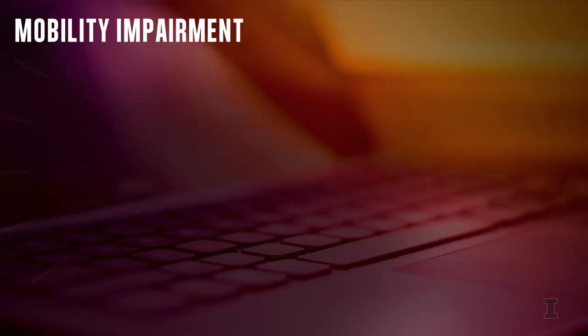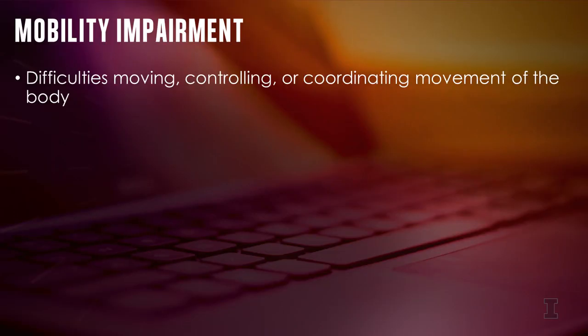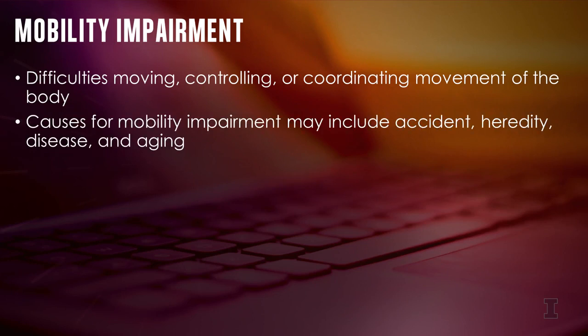Mobility impairment refers to a broad range of disabilities that include orthopedic, neuromuscular, cardiovascular, and pulmonary disorders. In general, mobility impairment applies to people with difficulties moving, controlling, or coordinating movement of the body. Causes for mobility impairment may include accident, heredity, disease, and aging.